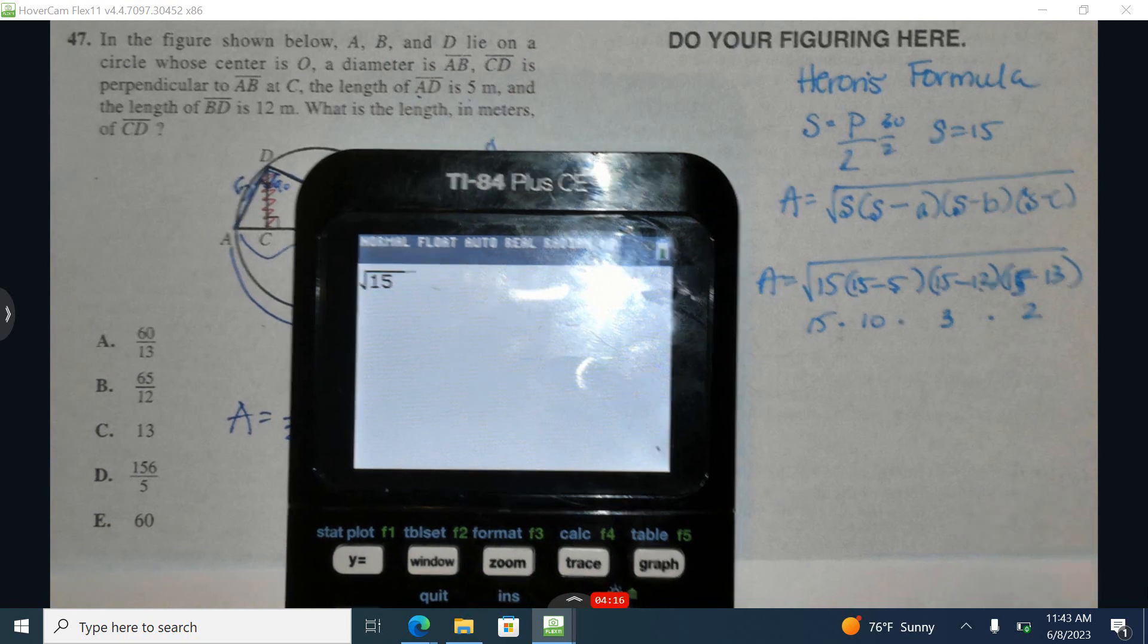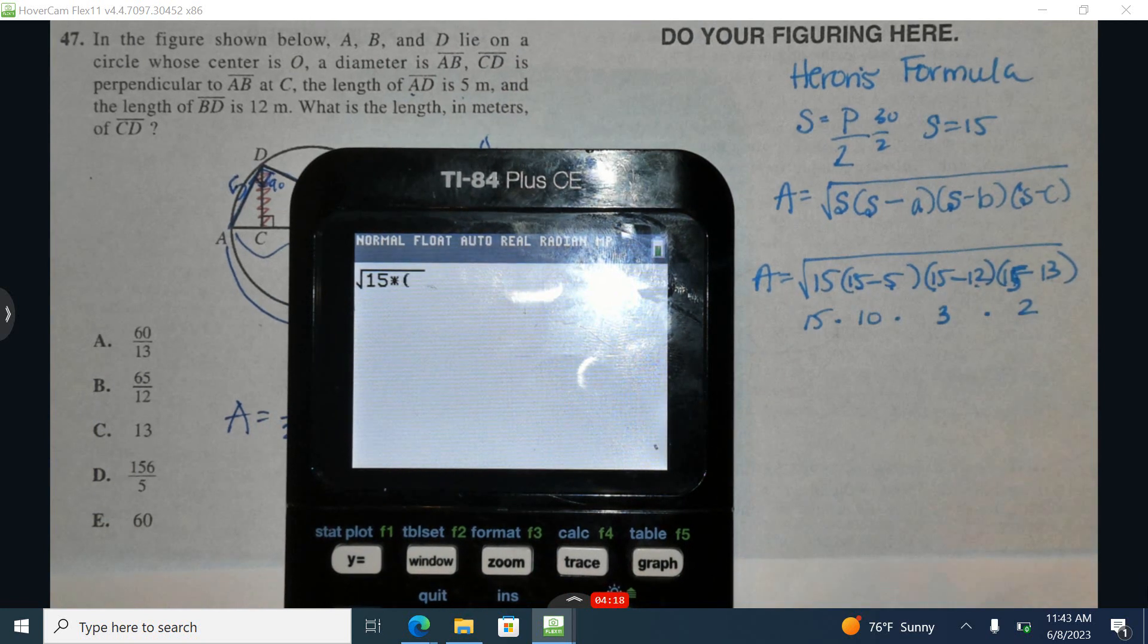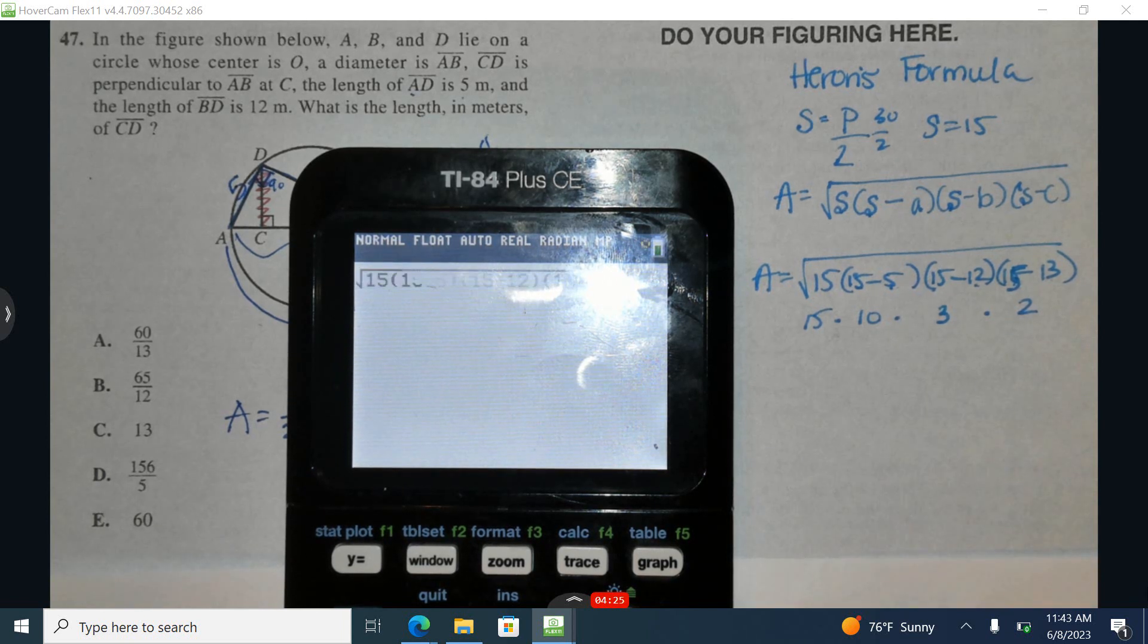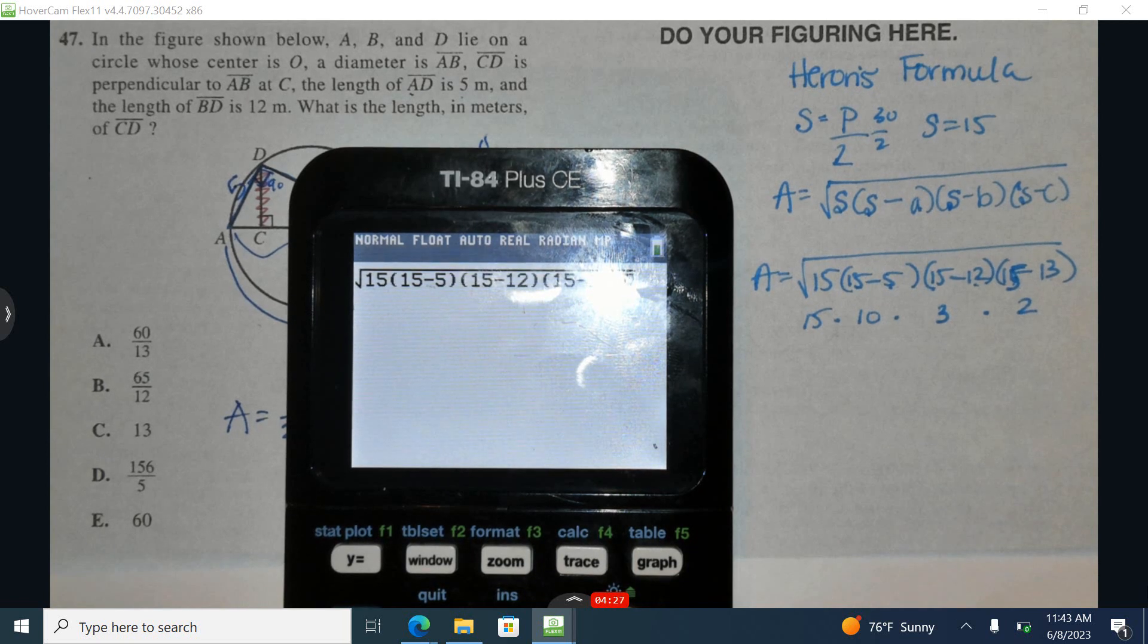So I have the square root of 15 times, and now if you wanted to plug it in because you don't trust your subtraction skills, you can plug it in as so. That would work just fine as well. So the area of this triangle is 30.